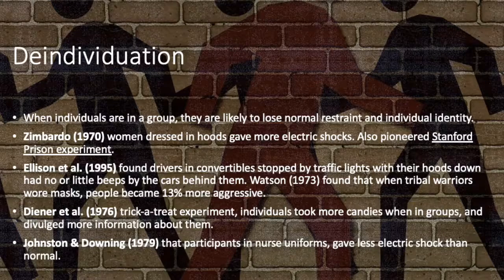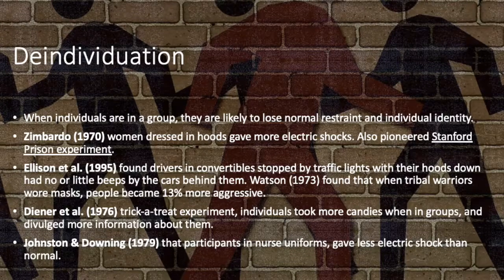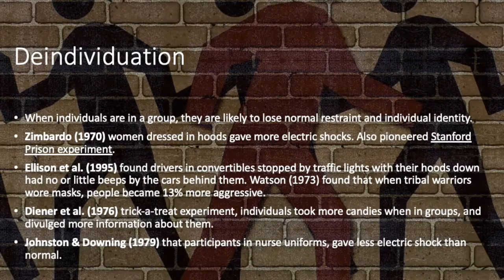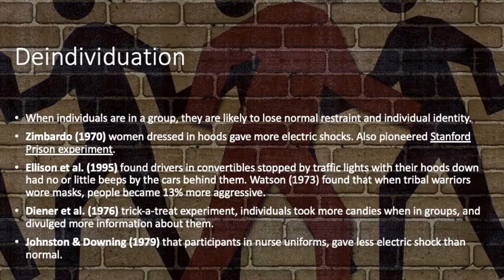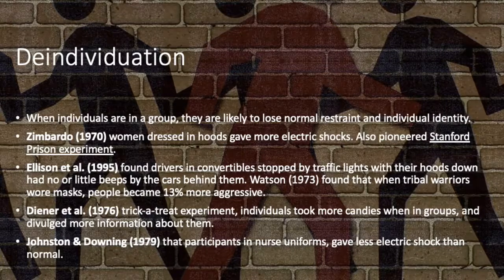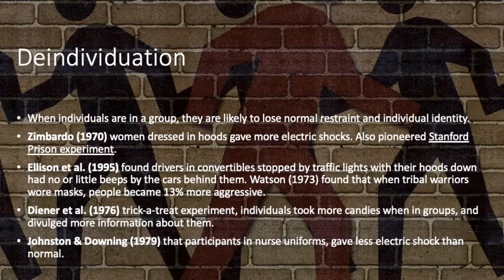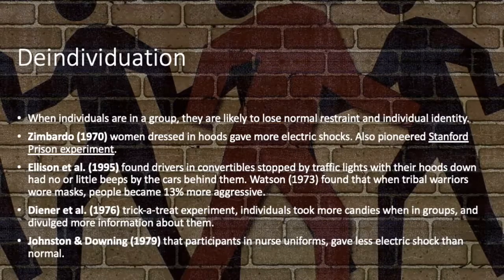Deindividuation is defined as when individuals are in a group, they are likely to lose normal restraints and their individual identity. An example of this includes a riot, or situations where individuals are dehumanised, which gives rise to the oppression of people based on unchangeable traits and may even lead to genocide.